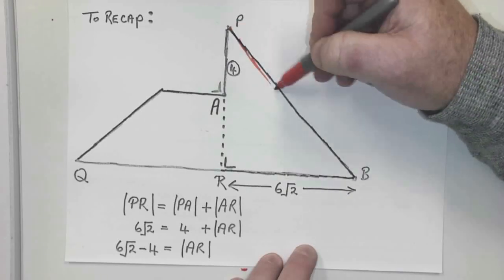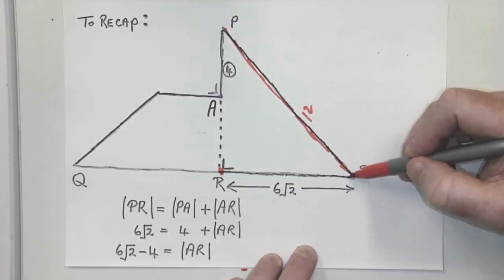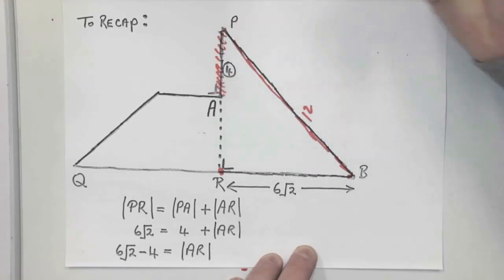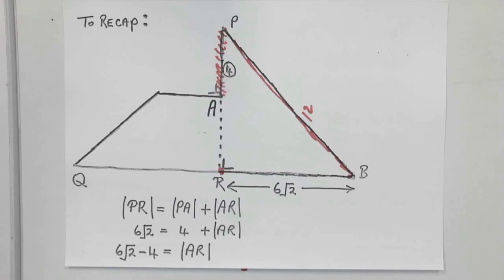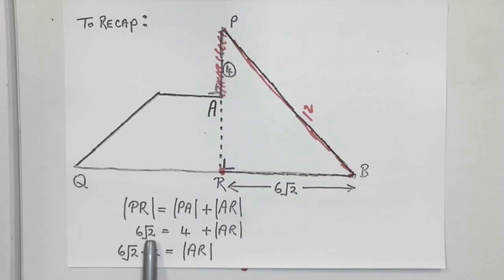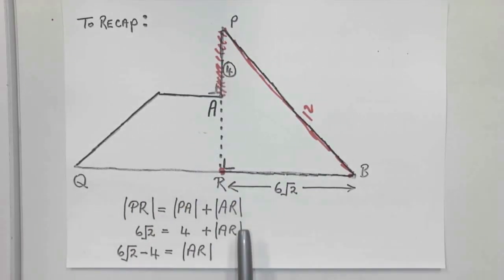So let's go back here for a minute. We knew that this distance was 12. We knew this distance from here to here was 6 root 2. We knew this bit here was 4. And all the while I haven't gone near the AB part yet. And as I said right at the top of this, this is not the only way to do it. But I like this here because if you look, PR is from there to there. It's equal to PA plus AR.